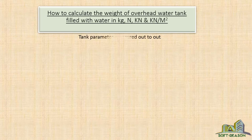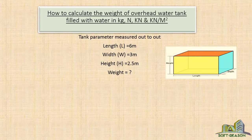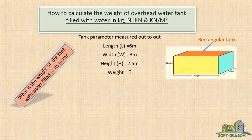The parameters measured out to out: the length L equals 6 meters, the width W equals 3 meters, and the height H equals 2.5 meters. You can see the water tank — the length, the height, and the width — a rectangular water tank. The question is: what is the weight of the tank with water filled to full height?